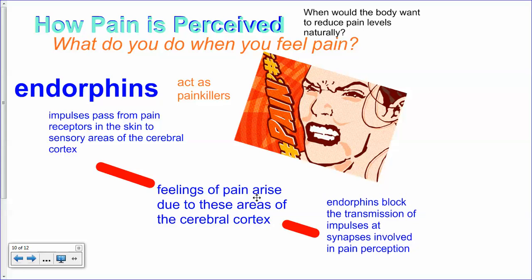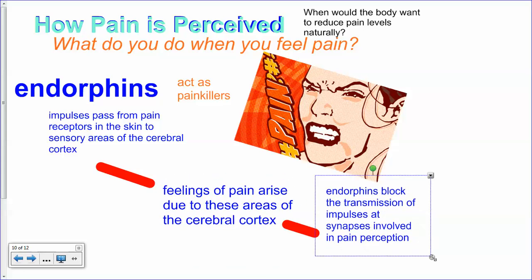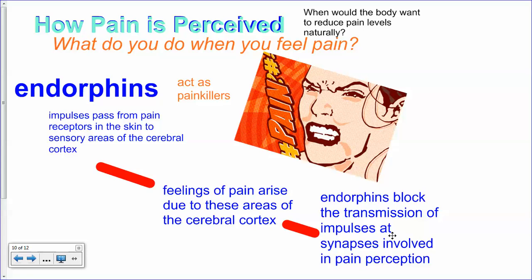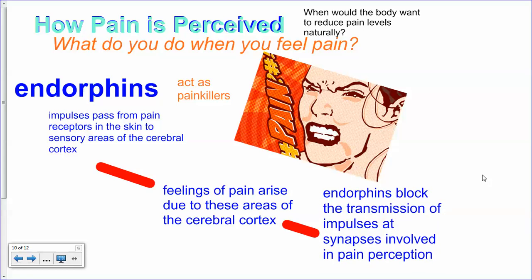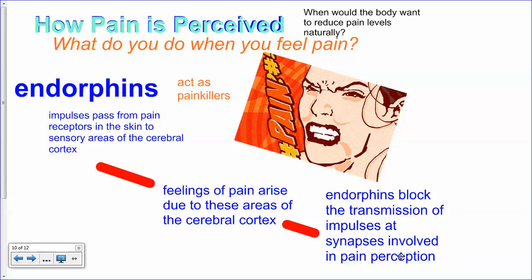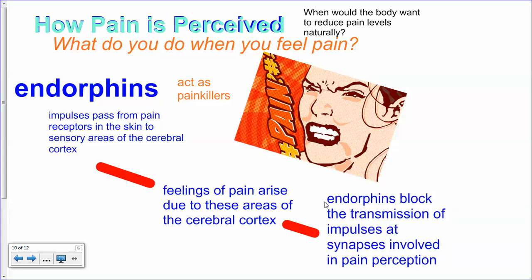Endorphins and various types of activities can increase endorphins. Getting really excited about something, doing sports and activities, can increase the endorphins being secreted in your body. Endorphins block the transmission of impulses at the synapses involved in pain perception. So if you have more endorphins, you may feel less pain — or not even feel pain when something in your body is trying to communicate that there is some kind of pain, such as sore muscles.